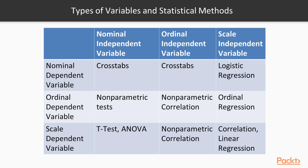We're going to talk about crosstabs — you can do crosstabs when you have nominal independent and dependent variables, or a nominal dependent variable and an ordinal independent variable. We're also going to talk about t-tests, where you have a scale-level dependent variable and a nominal independent variable. And we'll talk about correlations, where you have a scale-level dependent variable and a scale-level independent variable as well. Those are the three most common types of simple bivariate statistics we might obtain, though there are certainly more complex situations incorporating many more variables.